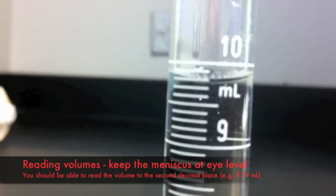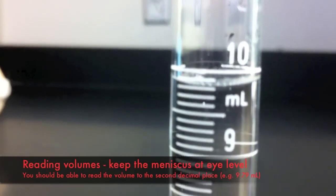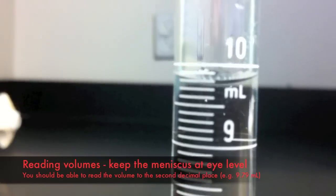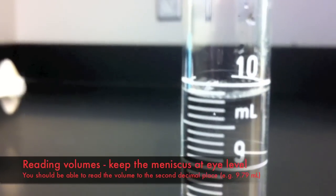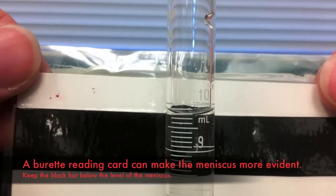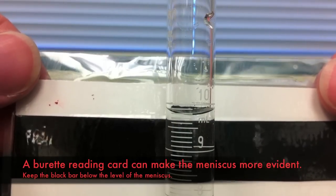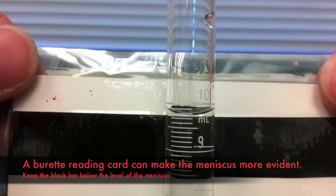To record the volume in the graduated cylinder you want to carefully measure the meniscus on the gradations. Be careful to look level at the level of the meniscus, not from above or below. You may wish to use a burette reading card to help you identify exactly where the meniscus is positioned.